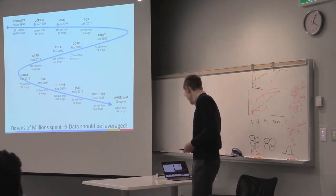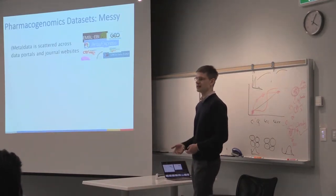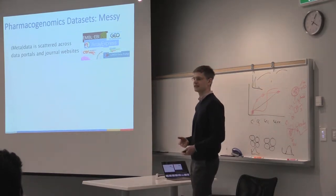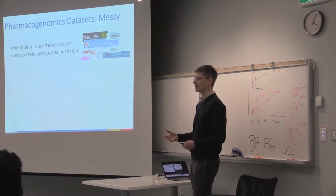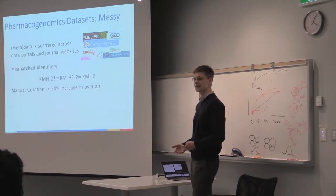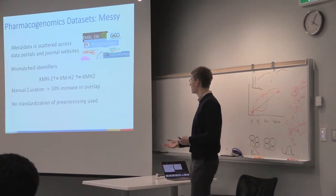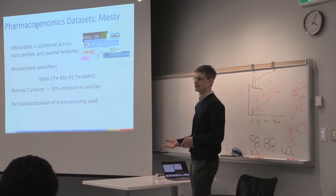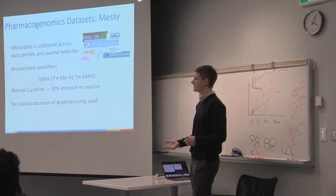However, one of the big problems is that these datasets can be extraordinarily messy. Because of their multi-assay nature, they're often scattered across different data repositories. It's hard to find the metadata—you have to go to journal supplementary information. The identifiers used are completely unstandardized and often require manual work, even within the same study, to match between different assays. Importantly, there's no standardization of preprocessing, so results from each dataset will be technically biased.